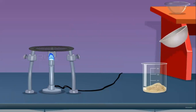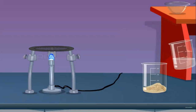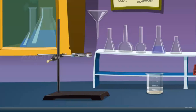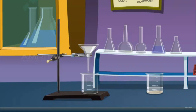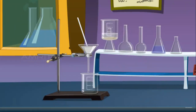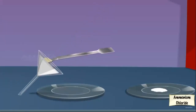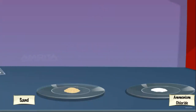Then we'll take the remaining mixture in the china dish, add distilled water to it, and stir the mixture with the help of a glass rod, as you can see. The next process is separation of sand from water. We'll take filter paper, a funnel, and a beaker, and pour the mixture in. Since sand can be separated by the process of sedimentation and filtration, the sand is separated from the mixture.